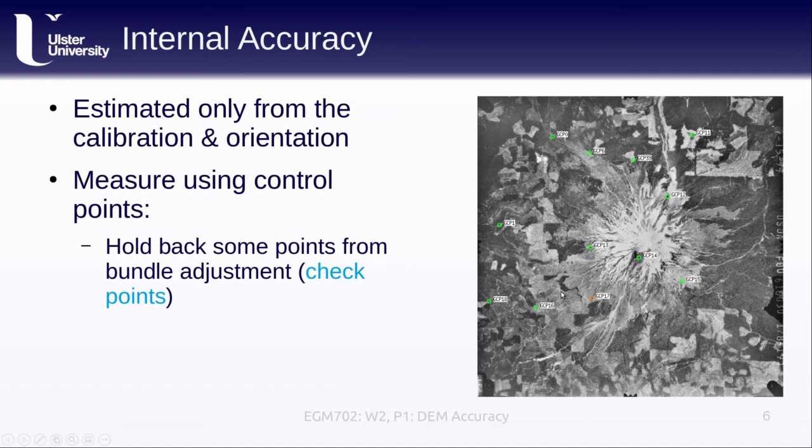This is a way for us to help make sure that the camera parameters, that the orientation and the calibration that we're computing is accurate by seeing how points that are not used in the actual calibration are located within this final system. We might also just use the bundle adjustment residuals. A lot of you would have seen, after the Campari step in the week one practical, you can look at the different GCP locations, how far away they are, and that tells you something about the internal accuracy of the system.